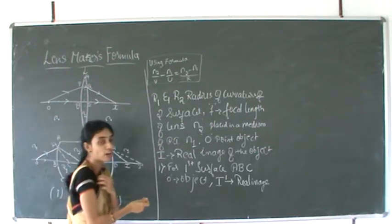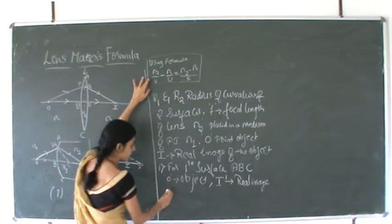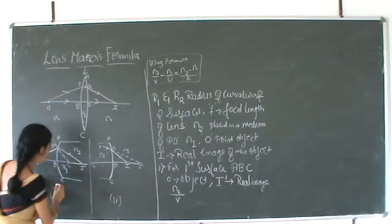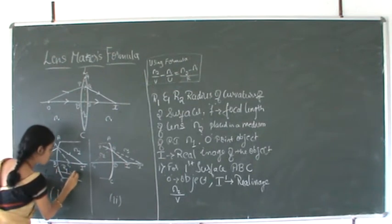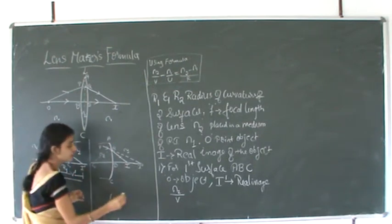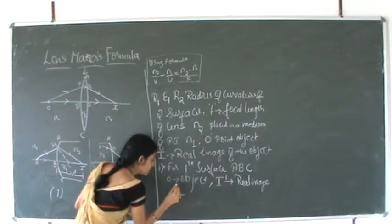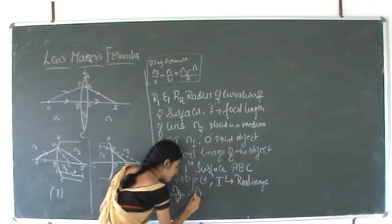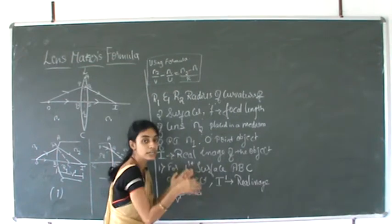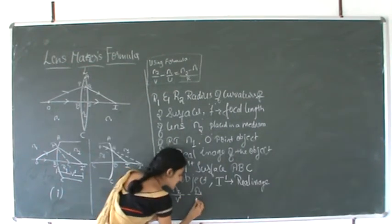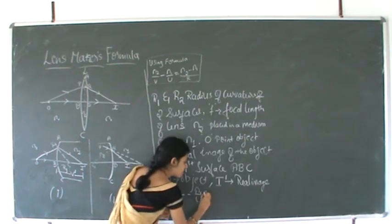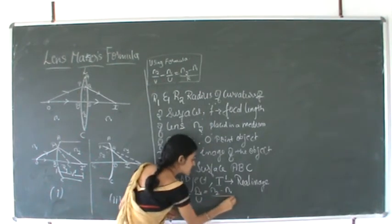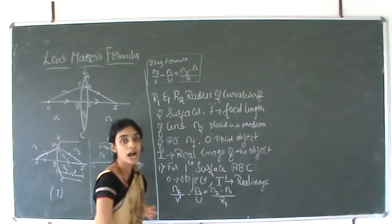The radius of curvature is positive according to sign convention. So I can write the formula as: N2/V' minus N1/U equals (N2 minus N1)/R1, where V' is the image distance, N2 is the medium where the image has been formed, N1 is the medium in which the object is placed, U is the object distance, and R1 is the radius of curvature of the first surface.